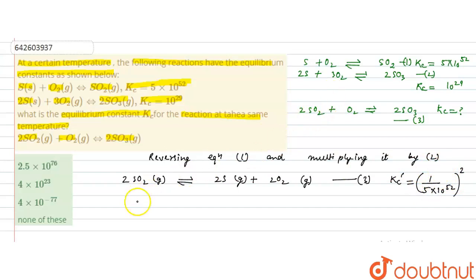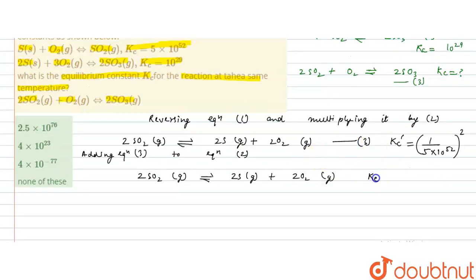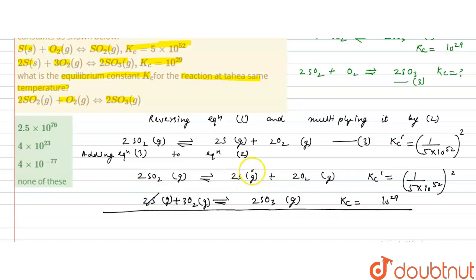Now we add this modified equation to equation 2. Equation 2 is 2S + 3O₂ → 2SO₃ with KC = 10²⁹. When we add these equations, the 2S terms cancel out. The oxygen terms give 3O₂ − 2O₂ = O₂ on the product side. This results in the equation 2SO₂(g) + O₂(g) → 2SO₃(g), which matches our target reaction.